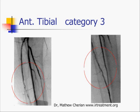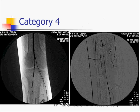Another patient who has a category 3 lesion in the anterior tibial artery showing good results with angioplasty. This patient had a non-healing ulcer.